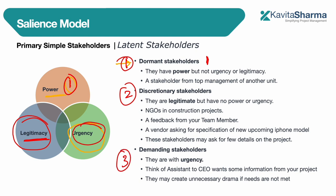The third latent type is demanding stakeholders — these are people or agencies with only urgency, who talk a lot and create unnecessary drama if their needs are not met. Think of a child asking for ice cream: the child has no power, the ask isn't legitimate, but when denied, they cry, don't cooperate, and create drama. You might choose to ignore them, but if they acquire other attributes tomorrow, you'll need to manage them accordingly.